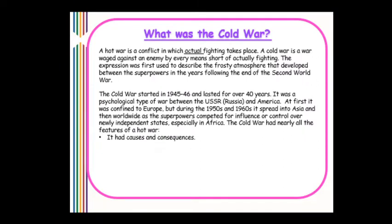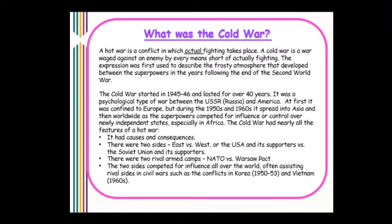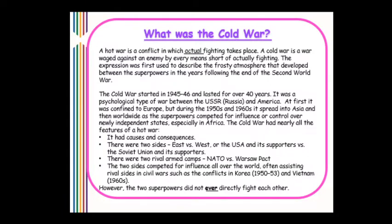The Cold War had nearly all the features of a hot war: causes and consequences, two sides (East versus West — the USA and its supporters versus the Soviet Union and its supporters), two rival armed camps (NATO versus the Warsaw Pact), and competition for influence worldwide. The two sides often assisted rival sides in civil wars, such as the conflicts in Korea (1950–53) and Vietnam in the 1960s. However, the two superpowers never directly fought each other.